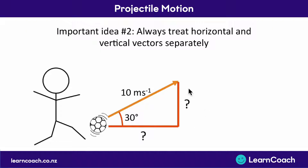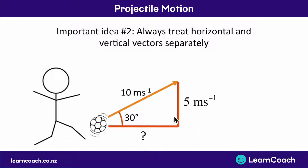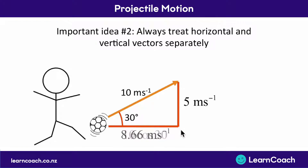To work out the vertical or horizontal movements we use trigonometry. We know one side of a right angle triangle and we know an angle, so the vertical component of the velocity is 10 sine 30, which gives 5 meters per second upward. For the horizontal component we use 10 cos 30, and putting that into your calculator gives 8.66 meters per second horizontally.